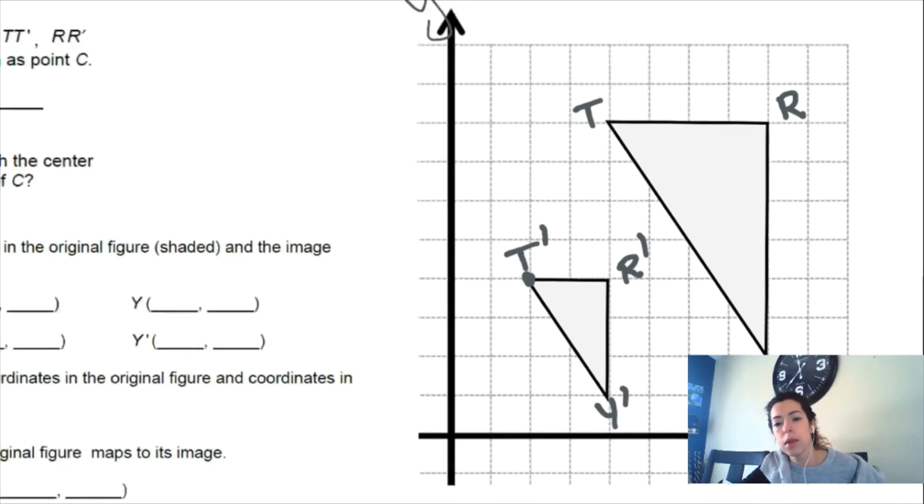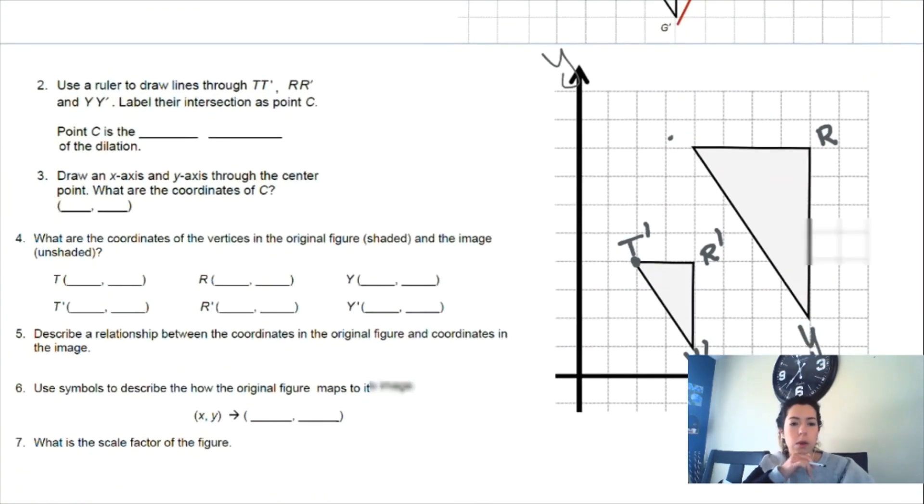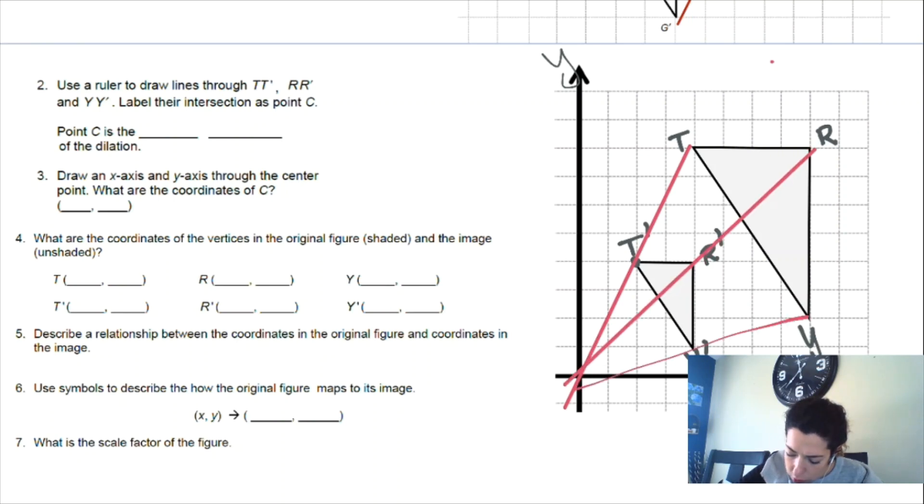Let's do a reduction here. It says use a ruler to draw lines through T, T prime, R, R prime. We don't have a ruler. You have the tools on your Google sheets, Google slides. So let's connect these points and see what we get. They are connecting in the origin. So it says point C is the center point of dilation.